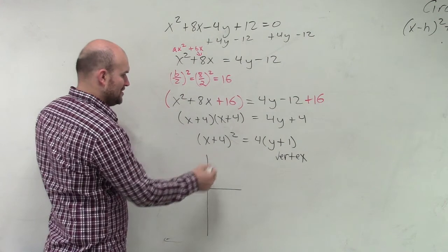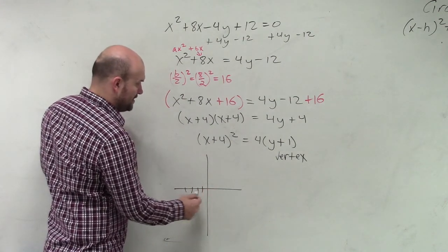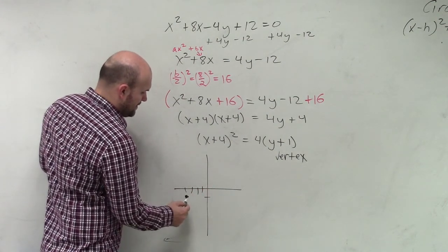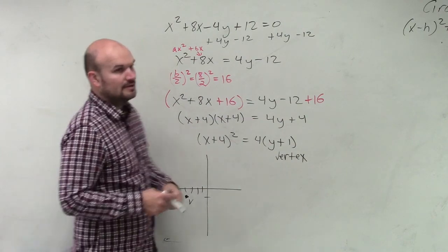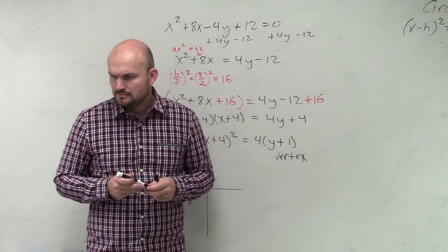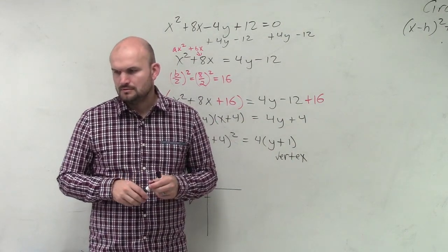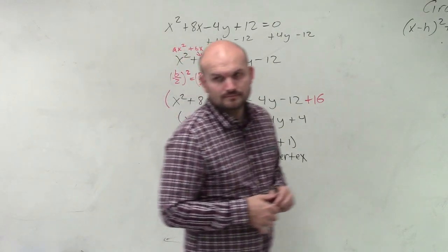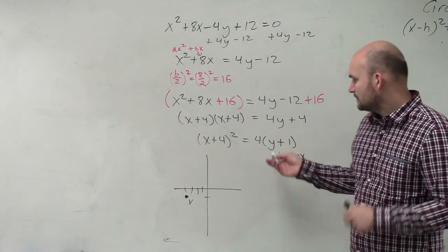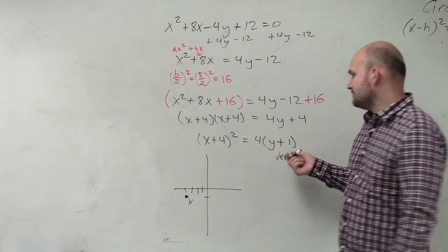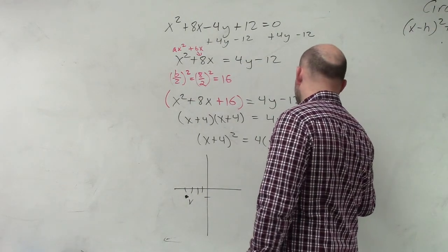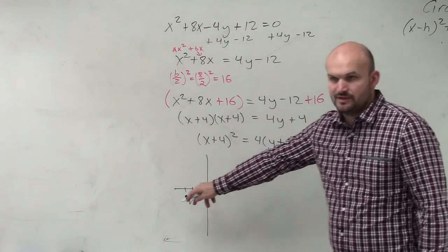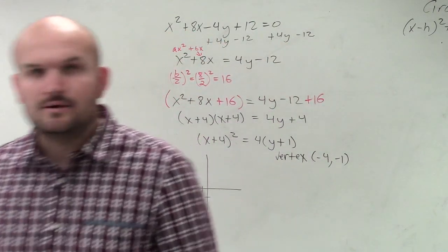So let's go. We got negative 4, 1, 2, 3, 4. Negative 1. I label that as the vertex. So I identify the vertex as negative 4, negative 1. So I just went in and plotted that.